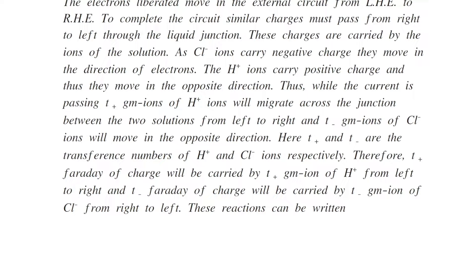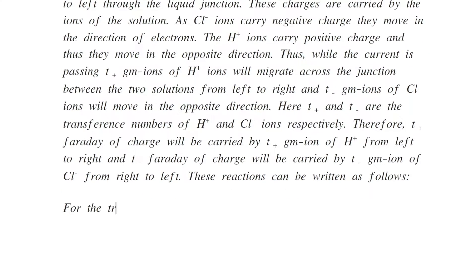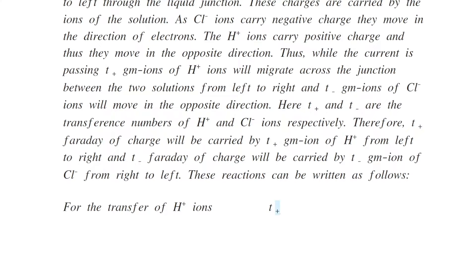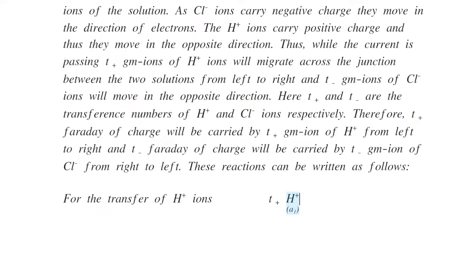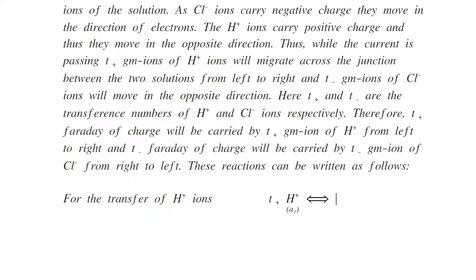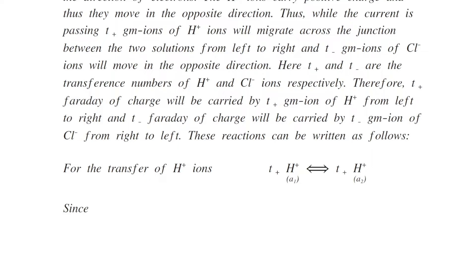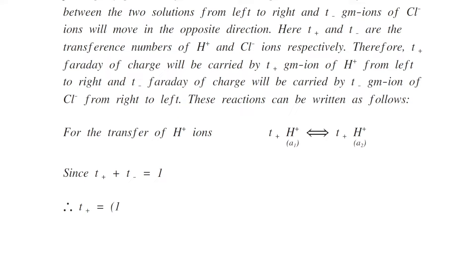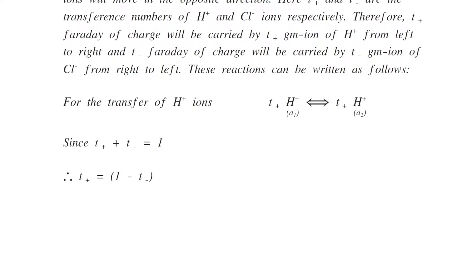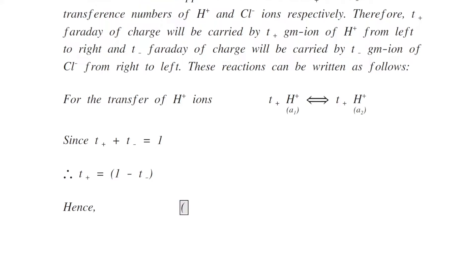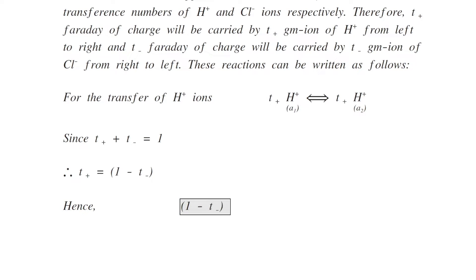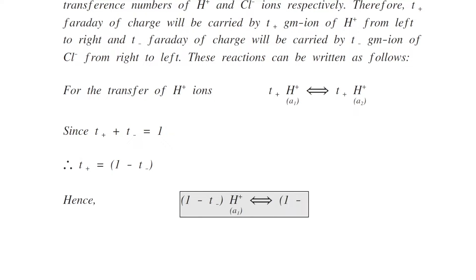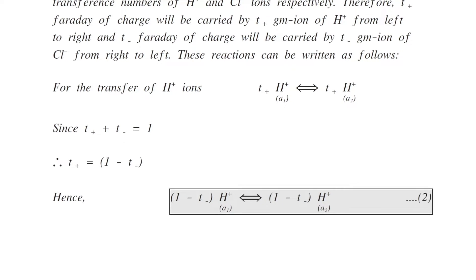T⁺ faraday of charge will be carried by T⁺ gram ions of hydrogen ions from left to right, and T⁻ faraday of charge will be carried by T⁻ gram ions of chloride ions from right to left. For the transfer of hydrogen ions: T⁺ gram of H⁺ ions of activity A1 is transferred to T⁺ gram of H⁺ ions of activity A2. Since the sum of T⁺ and T⁻ is 1, T⁺ equals 1 minus T⁻. Substituting, (1 − T⁻) of H⁺ ions of activity A1 is transferred to (1 − T⁻) of H⁺ ions of activity A2. This is equation number 2.